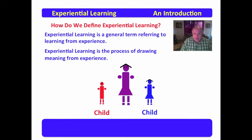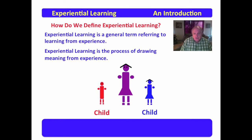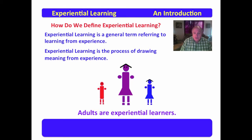In this diagram, we have children and we have an adult. In many of the theories that we've looked at, such as Piaget and Malcolm Knowles with Andragogy, we have observed that children learn differently than adults. Children tend to be very much analytical learners, while it might be argued that adults are experiential learners.